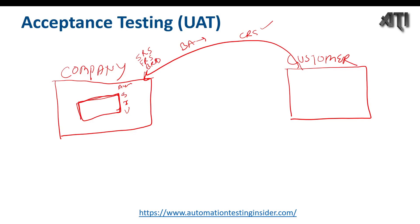Another reason for UAT is that the requirements gathered from the customer might have been misunderstood by the development and testing teams. The customer wants to verify whether all requirements were captured and implemented as per their expectations, and whether the design fulfills their needs. In most companies we have pre-UAT and post-UAT; in some companies, only UAT is done.